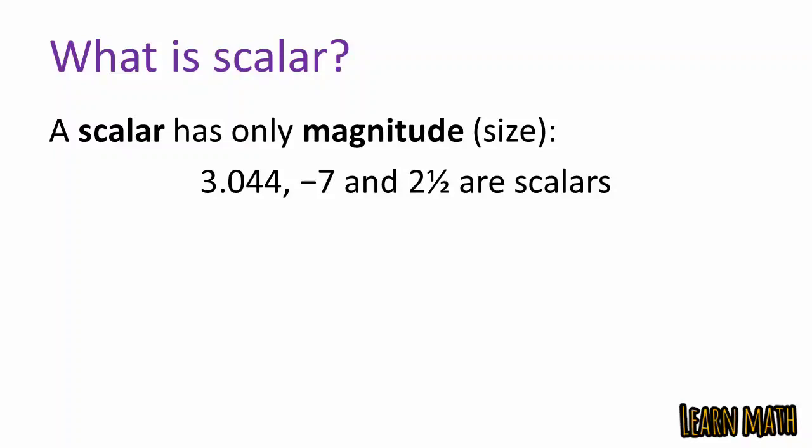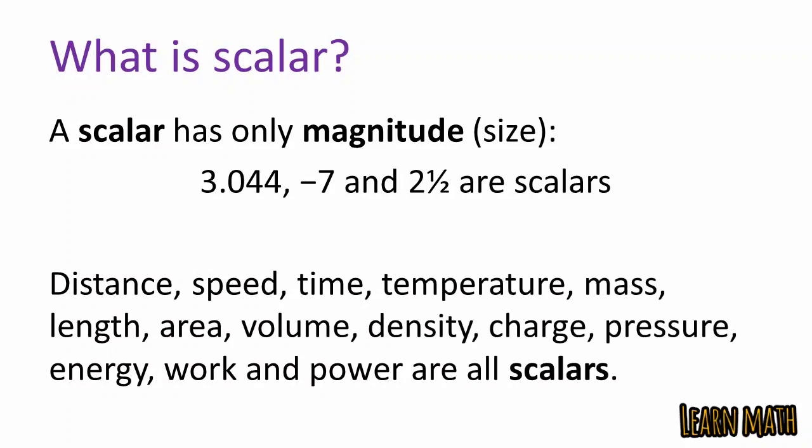Magnitude is a number with a proper unit. For example, 3 kilometers — here 3 is the number and kilometers is the unit, so 3 kilometers represents the magnitude. Scalar quantities are those which have only magnitude but no direction: distance, speed, time, temperature, mass, length, area, etc.